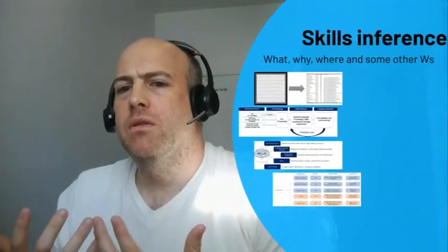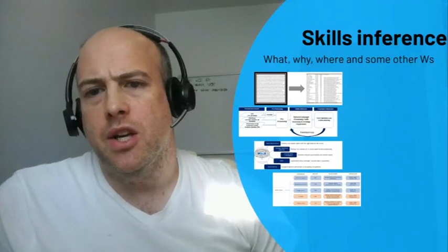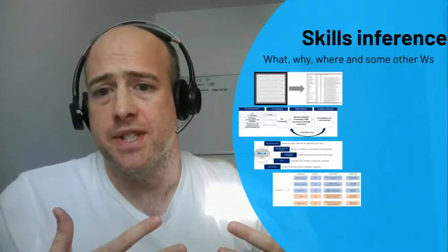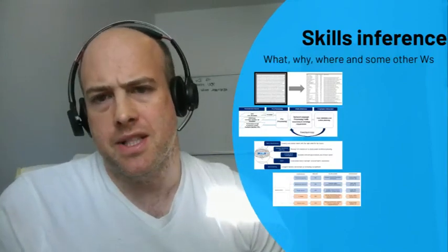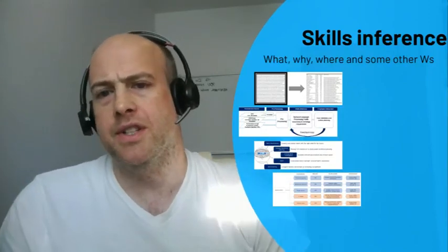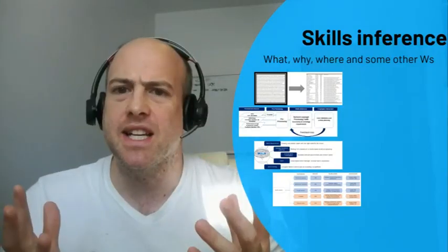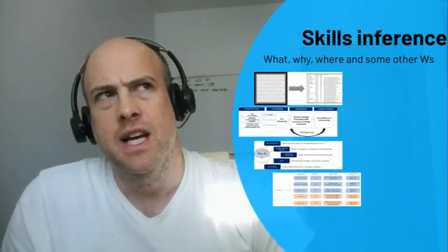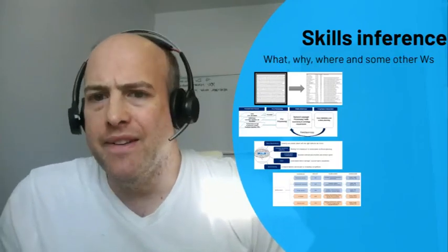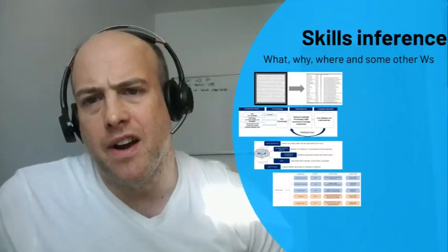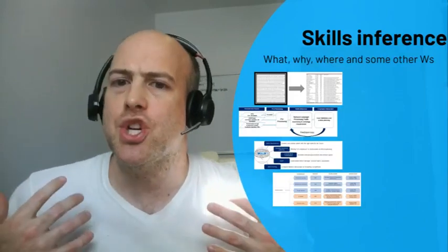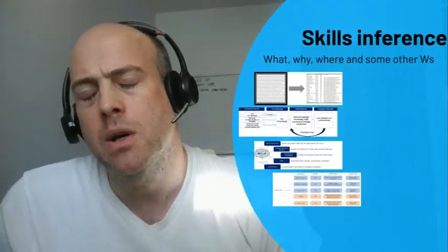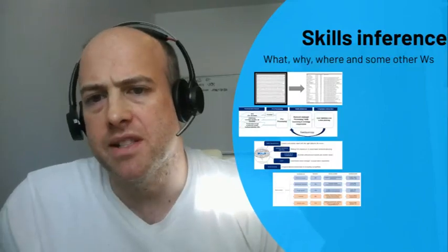Traditionally what companies do within L&D and org development is try to get skills data by asking employees. Sure, they know what skills they have, but then there's often a fight with the manager who thinks it's a big waste of time. We spend a long time arguing about what a skill is, what the taxonomy is, and chasing people to complete skills assessments. Even though the data is highly valuable, we spend about 90 to 95 percent of the process just collecting the data rather than acting on it — so the whole process ends up as a big waste of time and really irritates employees.